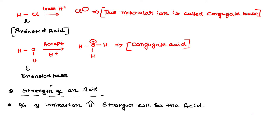In this reaction, HCl loses one proton and becomes Cl⁻. This ion is called the conjugate base — it is the conjugate base of hydrochloric acid. On the other hand, the water molecule accepts one proton and becomes H₃O⁺, which is called the conjugate acid. H₃O⁺ is the conjugate acid of the water molecule. So I have introduced two terms: conjugate base and conjugate acid.